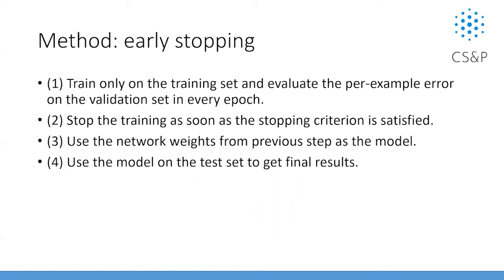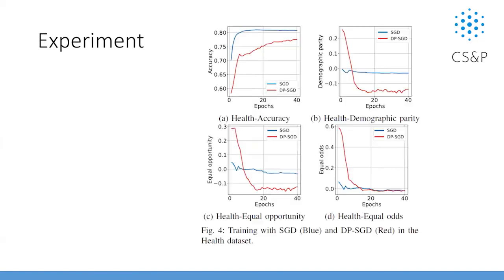Here is an example showing the results. We compare using DPSGD versus not using it. We observe that accuracy decreases a little bit but is still acceptable. The fairness is improved, and the privacy level is also improved. The example shows the stopping criterion plays a valuable part in the experiment.